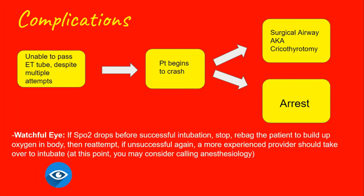The main complication that worries everyone is the patient coding. So we do everything we can to prepare to prevent that. We adequately pre-oxygenate the patient, we give push-dose vasopressors and fluid resuscitation for soft blood pressures, we position the patient appropriately and closely monitor. We stop and bag the patient to re-oxygenate if SpO2 begins to fall. And if everything fails, the patient gets a surgical airway — a cut is made in the throat and the ET tube is advanced through there. Keep the crash cart close by for patients who are unstable.